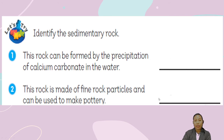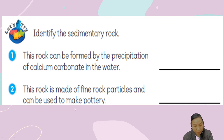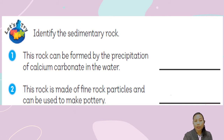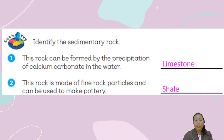I'll give you two minutes to answer. Number two: this rock is made of fine rock particles and can be used to make pottery. Two minutes to finish. Let's have the answers: the rock formed by precipitation of calcium carbonate is limestone. The rock made of fine particles that can be used to make pottery is shale.